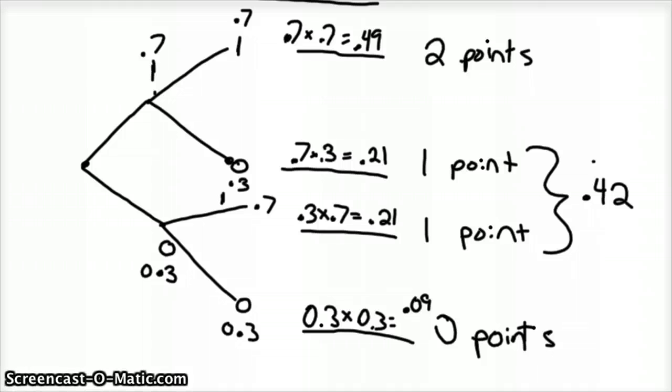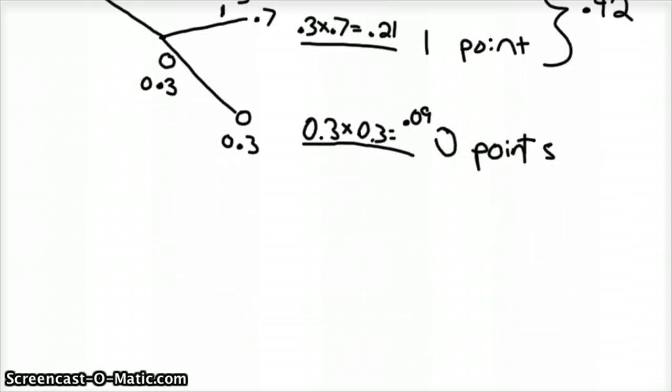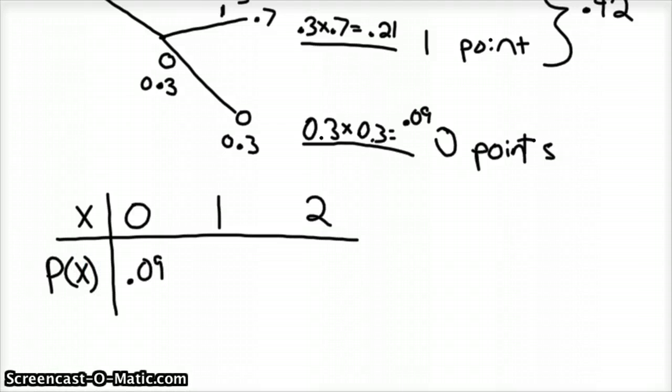So we've got the distribution created. So I'm going to create a probability distribution table. X is our points. You've got three choices. You can score 0 points, 1 point, or 2 points. And the probability of that occurring, we already figured out, is 0.09 for scoring 0 points, 0.42 for scoring 1 point, and 0.49 for scoring both of your points.